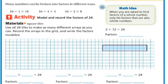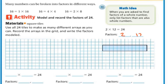So 2 times 12 — we've got 2 rows going across 12 tiles, so 2 times 12 is 24. There are 24 squares inside this array. The factors from that would be 2 and 12.